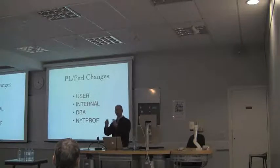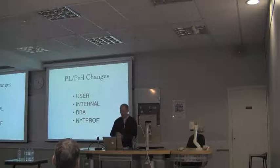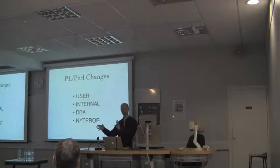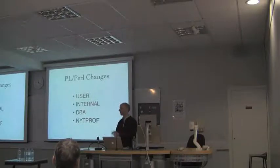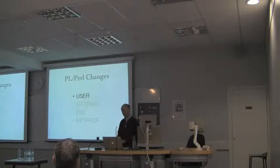I'm going to be covering some user-level stuff, some internal stuff, things like DBA, and then NYTProf. Because we've got so much code that runs in the server, we didn't have much visibility of how fast or slow it was running — other than that it was not fast enough.